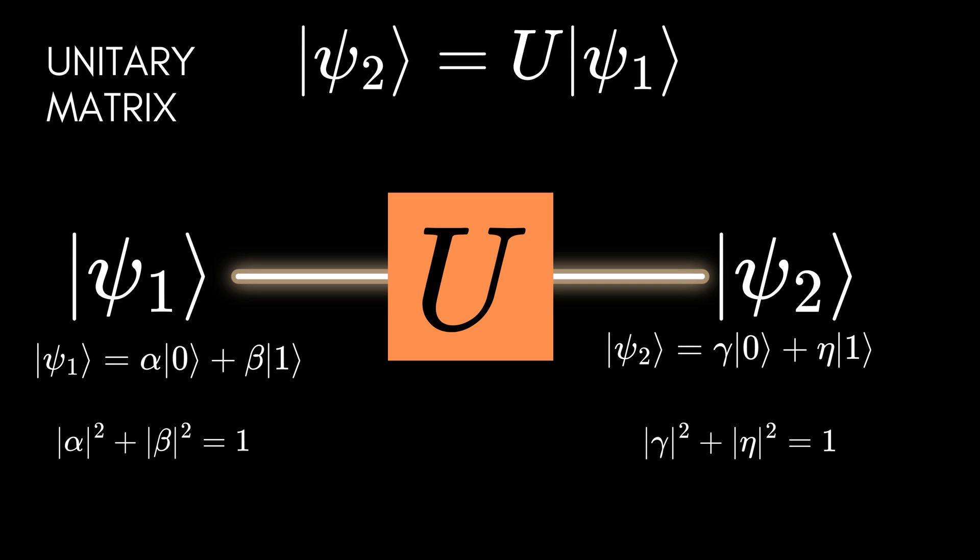After feeding state psi-1 to quantum gate U, represented by a unitary matrix, we get another quantum state psi-2, which has another form — for example, gamma|0⟩ + eta|1⟩. Again, |gamma|² + |eta|² = 1. The magnitude |alpha|² + |beta|² is the length of quantum state psi-1, and |gamma|² + |eta|² is the length of quantum state psi-2. Since unitary matrices don't change the length of vectors, the coefficients of the output state still represent valid probabilities, and the sum of the probabilities is equal to 1.